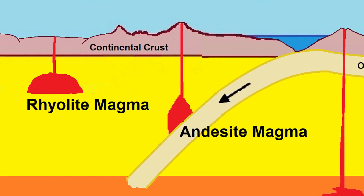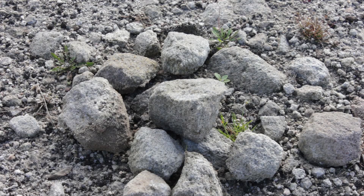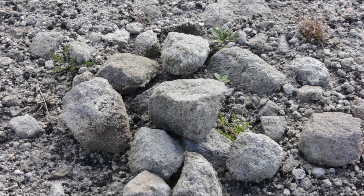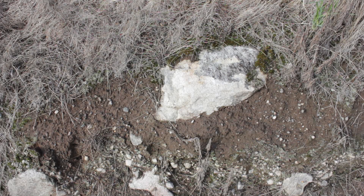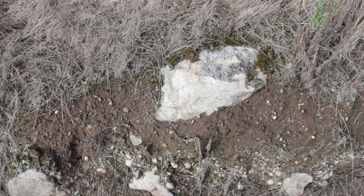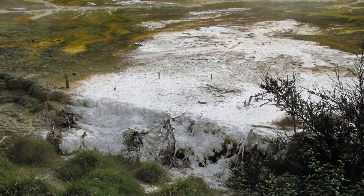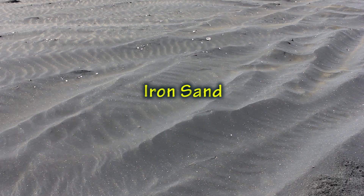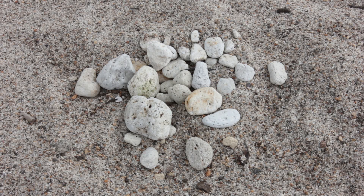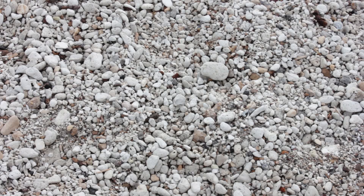Rhyolitic magma forms close to the surface and is relatively cool and silica rich. Rhyolitic magma is described as acidic. Rhyolite is light coloured or white — a clue that the rock contains a lot of silica, more than 70%, and not much iron.